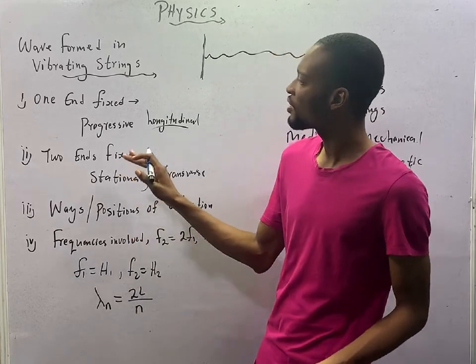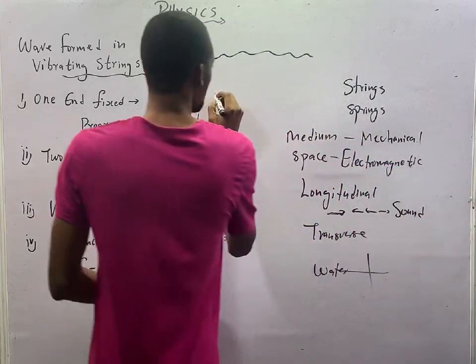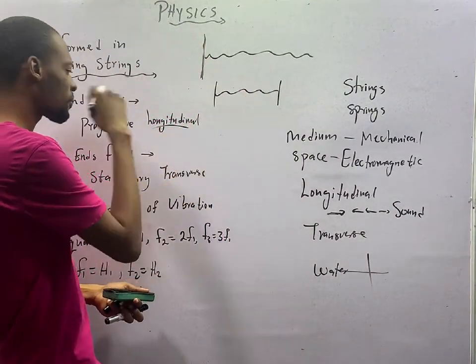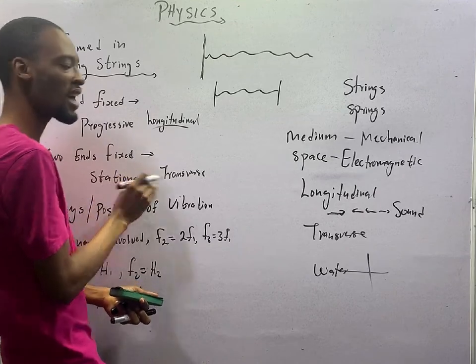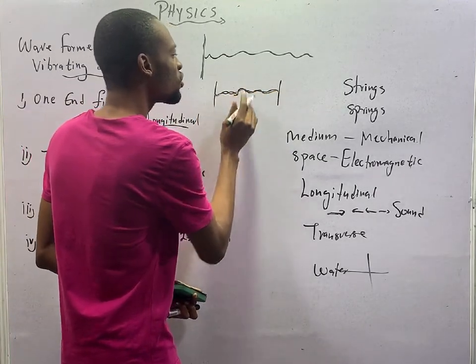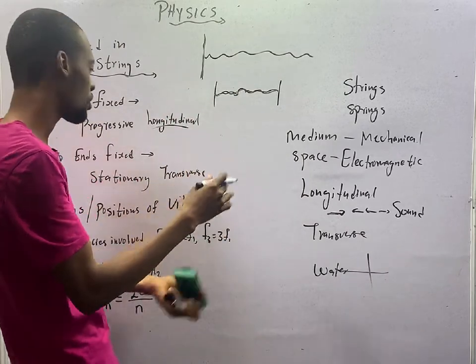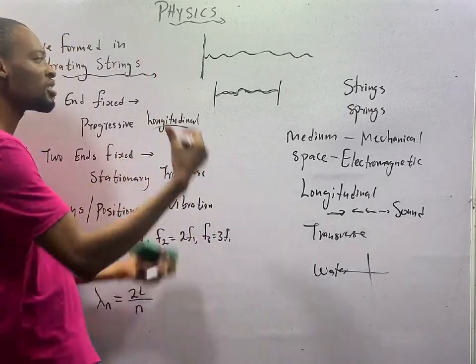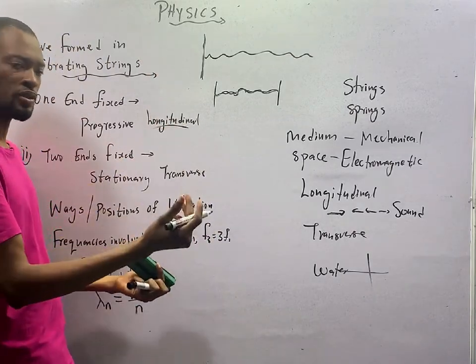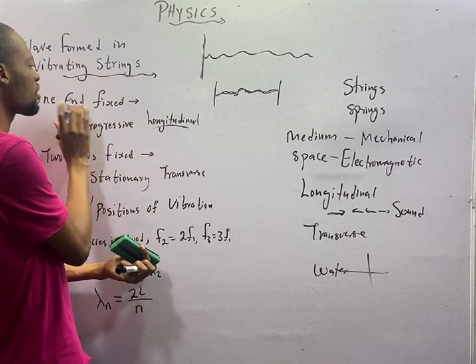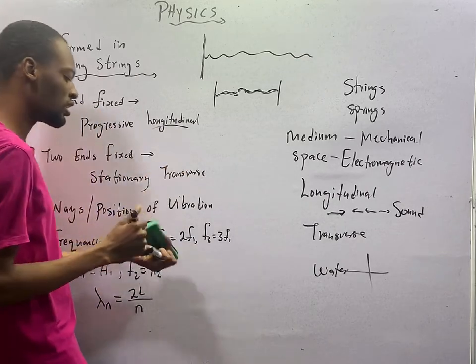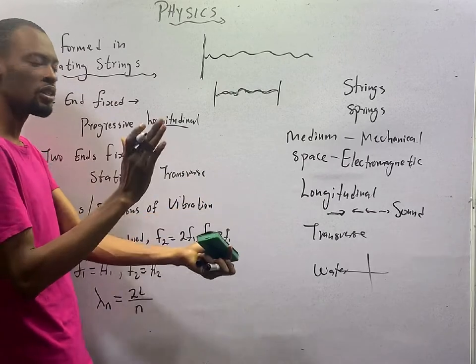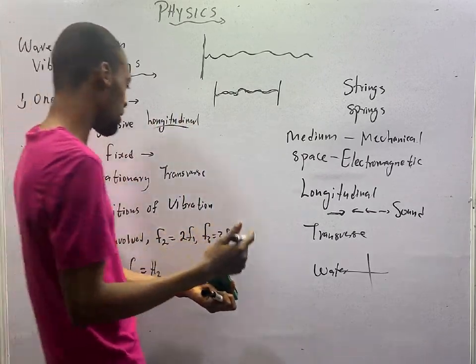Meanwhile, when you have a string with two ends, this is the string. Here is fixed. And here is fixed. Once you vibrate this string, the wave that is produced is stationary. Why? This is going here. This is going here. There is no net wave. It cancels out. The net is zero. It is stationary and it is transverse. Which means, the direction of travel is perpendicular to the direction of propagation.